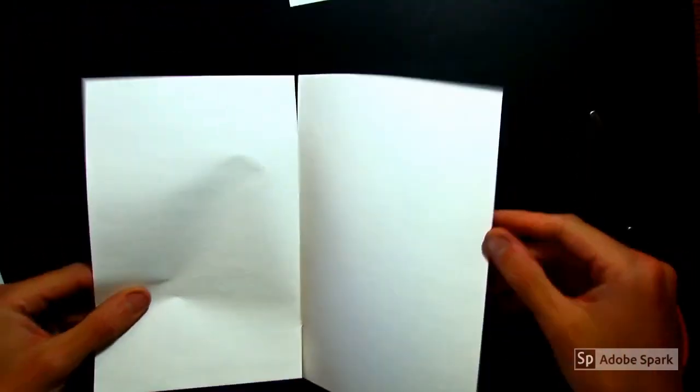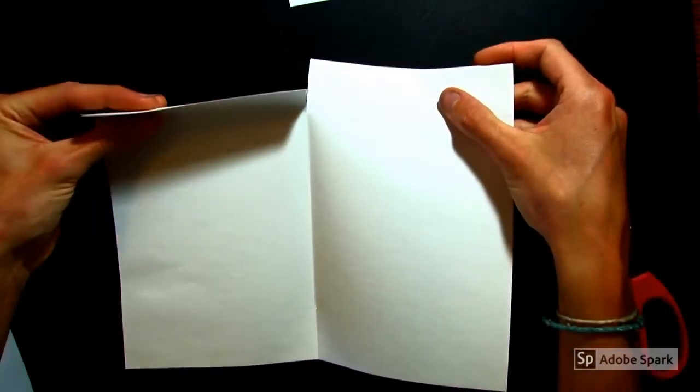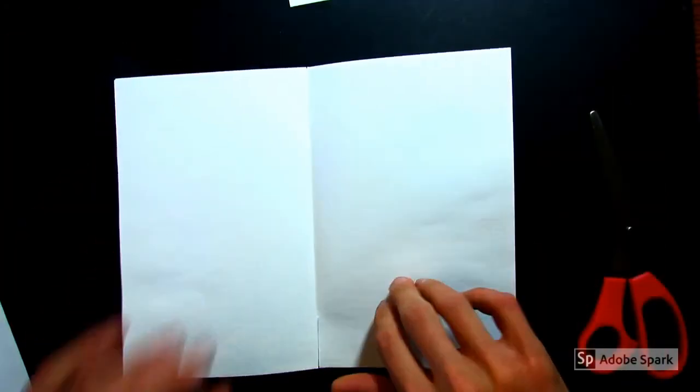Flip our paper around, and cut an inch in on the other side. So when you look at your paper, we should have a flap at the top and a little flap at the bottom.